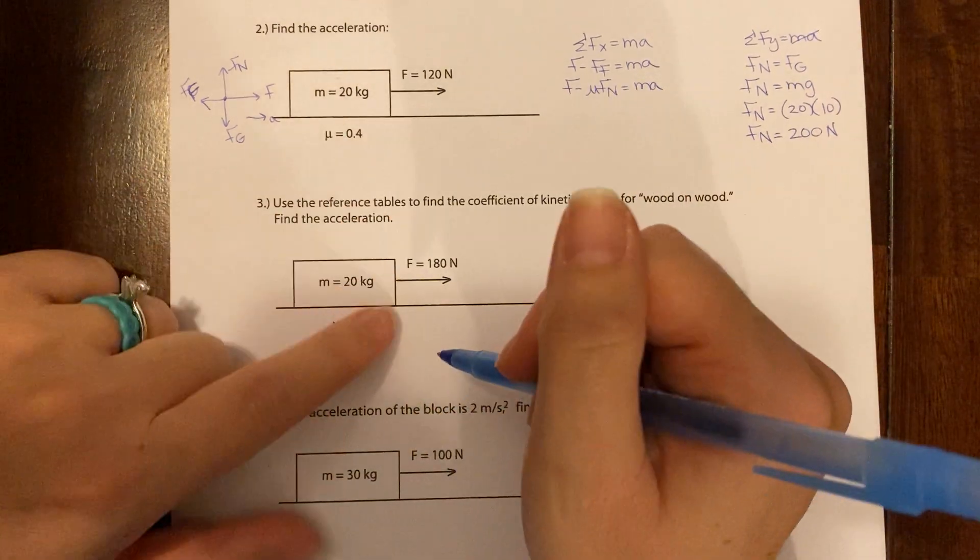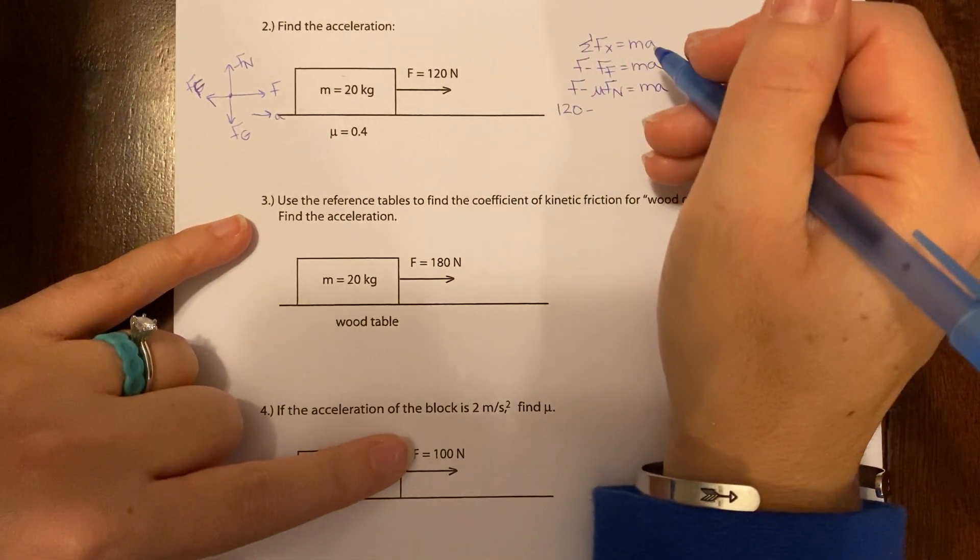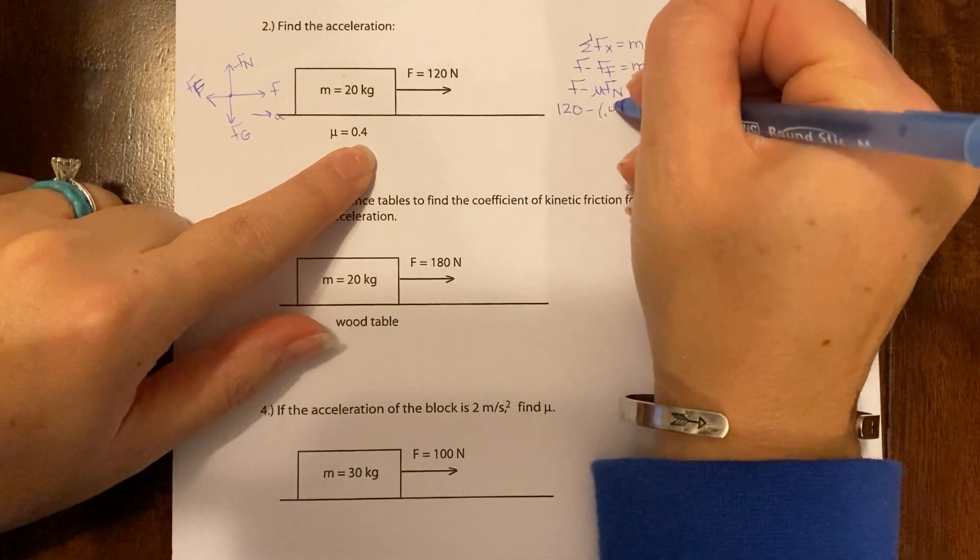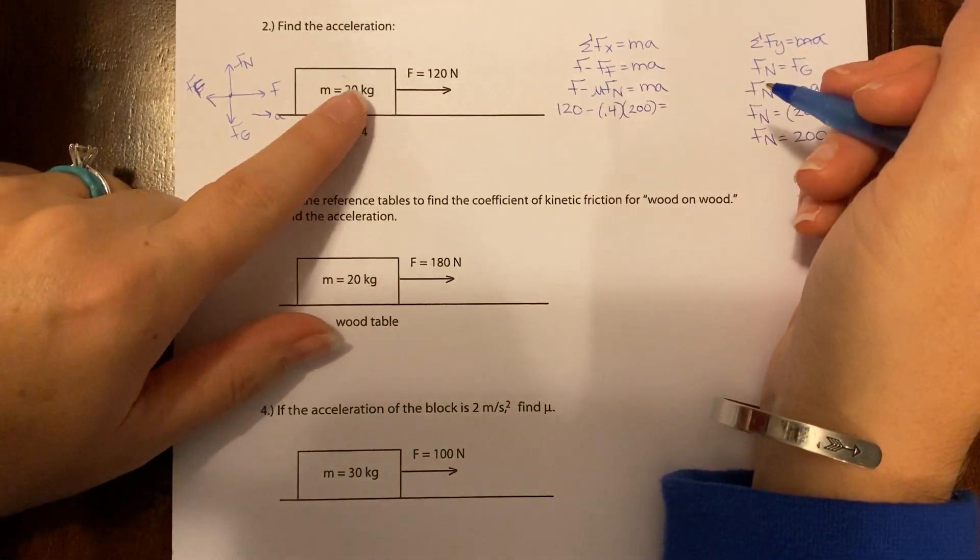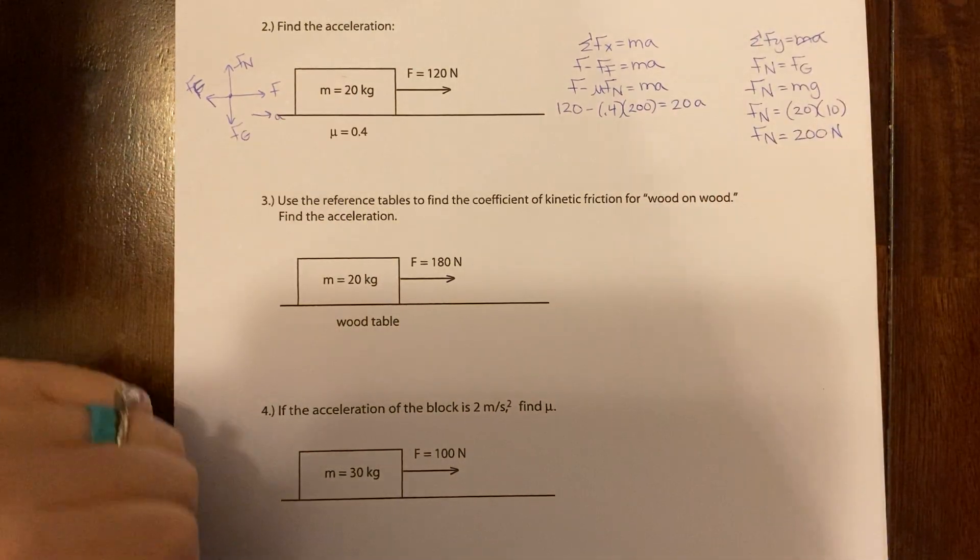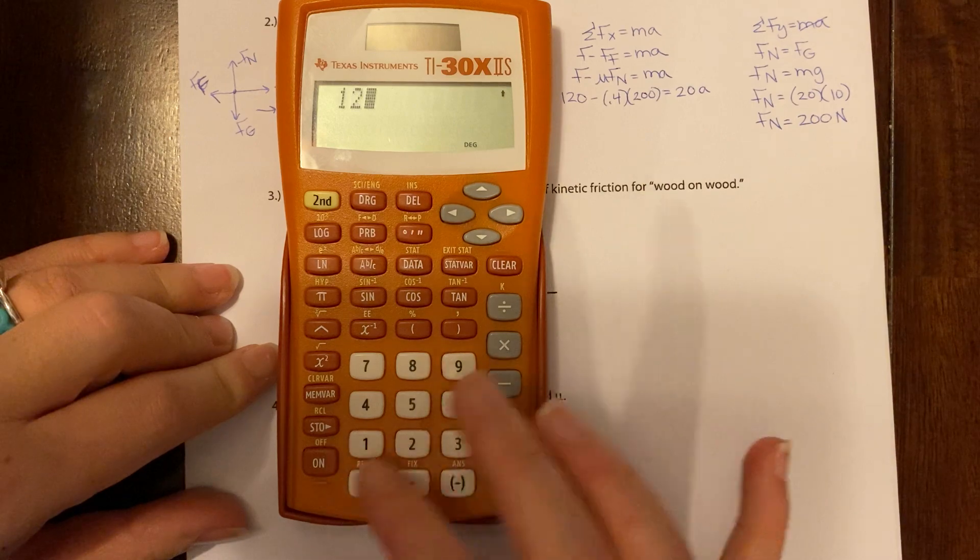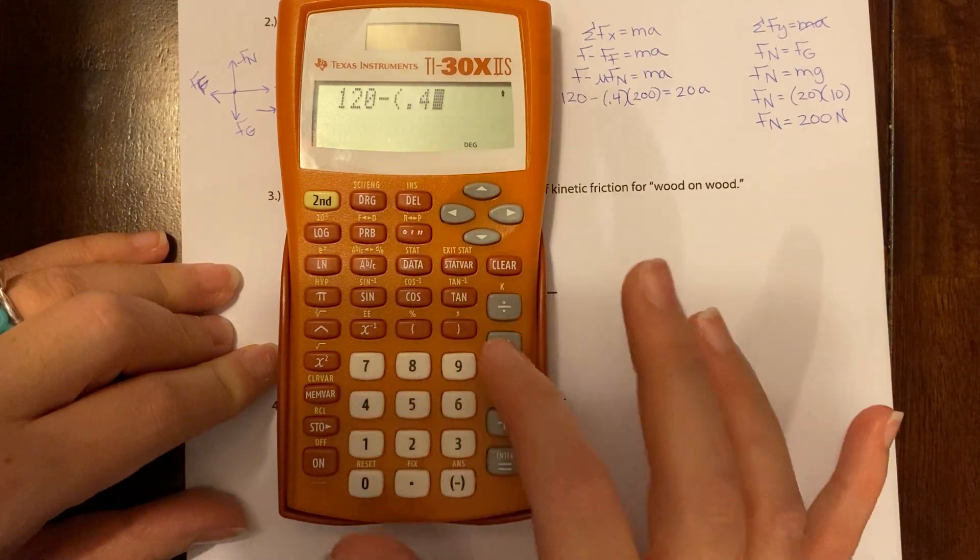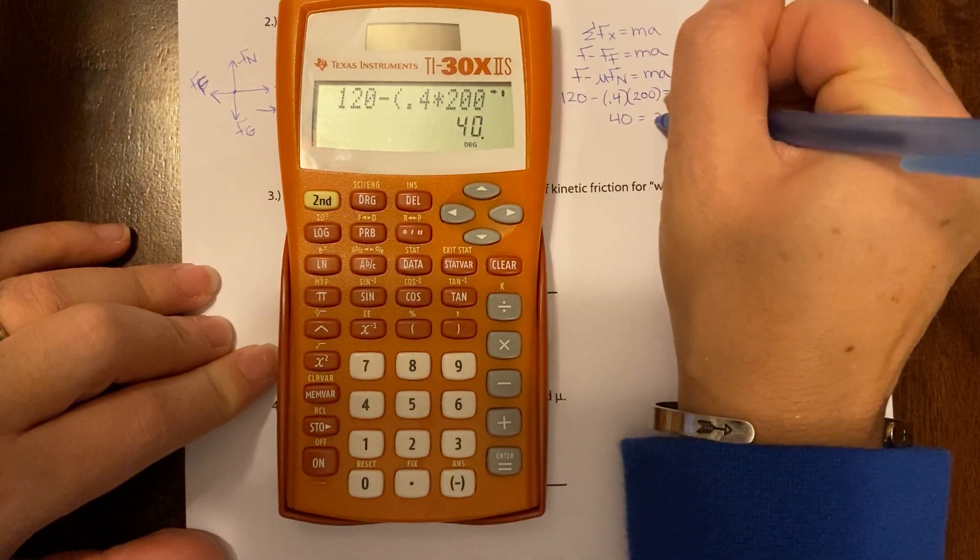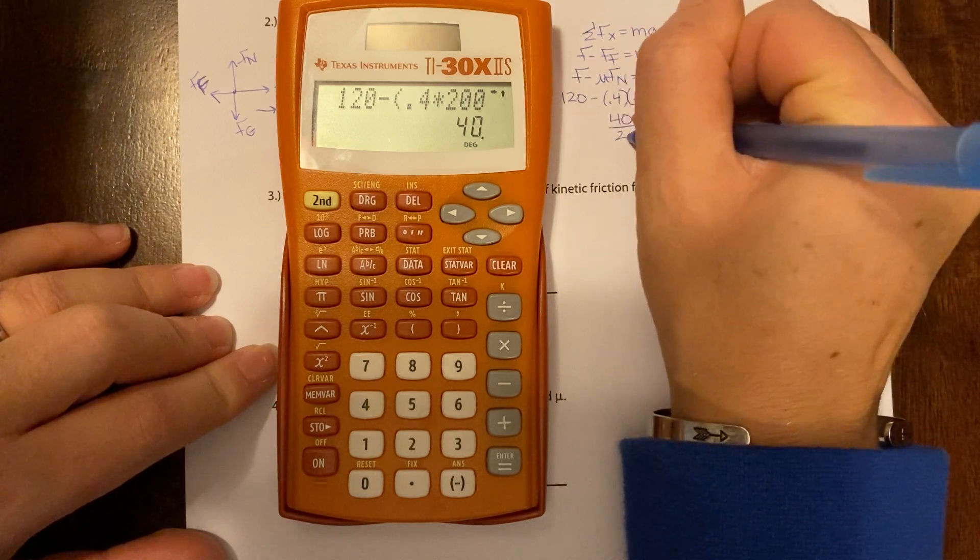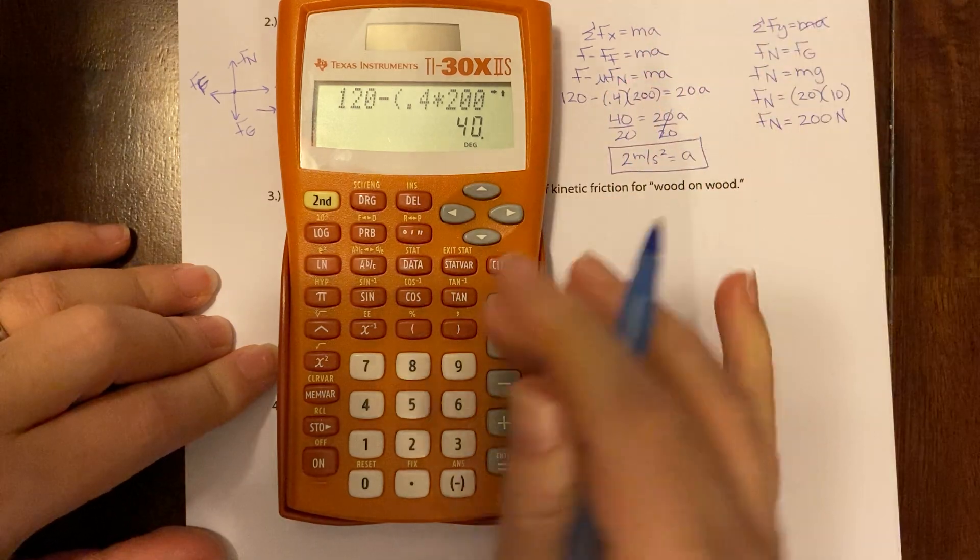This will help us because we're going to need to plug this in over here. Okay, so the pulling force is 120. Mu is 0.4. The normal force is 200. The mass is 20 and we're looking for a. Okay, so let's do this. I'm going to do 120 minus 0.4 times 200. All right, so on this side I get 40 equals 20a. Or I get 2 meters per second squared is equal to my acceleration.